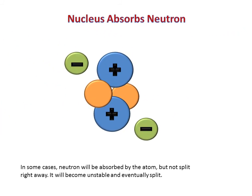A neutron can also be absorbed into the nucleus of the atom without splitting the atom right away. However, it causes the atom to become unstable and will eventually split anyway.